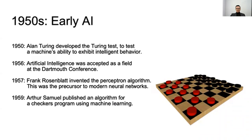In 1957, Frank Rosenblatt invented the perceptron algorithm, which was a precursor to modern neural networks. In 1959, Arthur Samuel published an algorithm for a checkers program using machine learning.